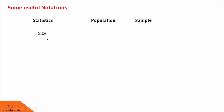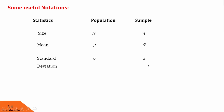Now let us see some useful notations. For size: if we are dealing with population, size is denoted by capital N, and if dealing with a sample, its size is given by small n. When talking about mean of the population, it is given by μ, and the mean of the sample is denoted by x̄. Similarly, standard deviation of the population is given by σ, and the standard deviation of the sample is given by S.